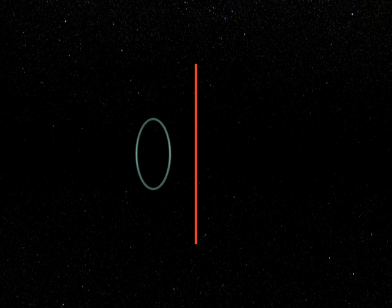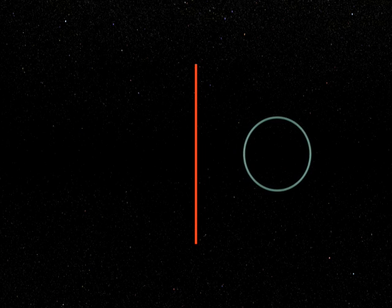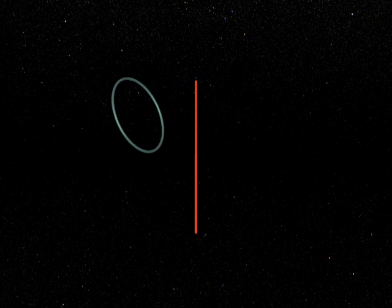Take a torus of revolution. That is, the surface described by a circle rotating around an axis in its plane.